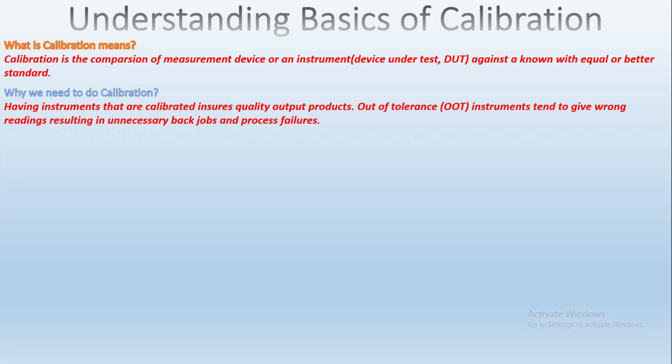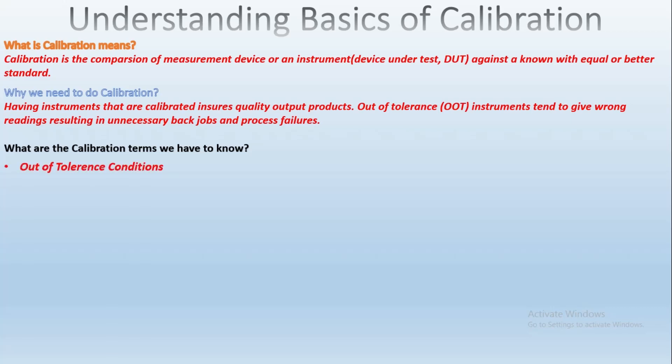There are some important common calibration terms we need to know before working on calibration. The first one is out of tolerance condition. If the results are outside of the instrument's performance specifications, it is considered an OOT — out of tolerance — condition, and will result in the need to adjust the instrument back into specification.